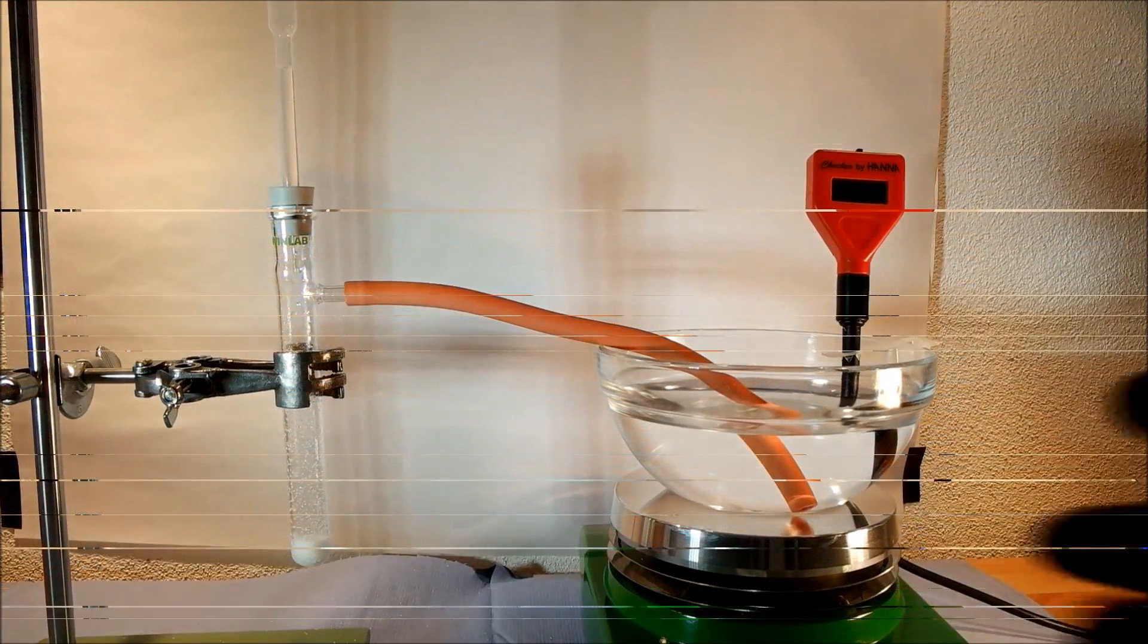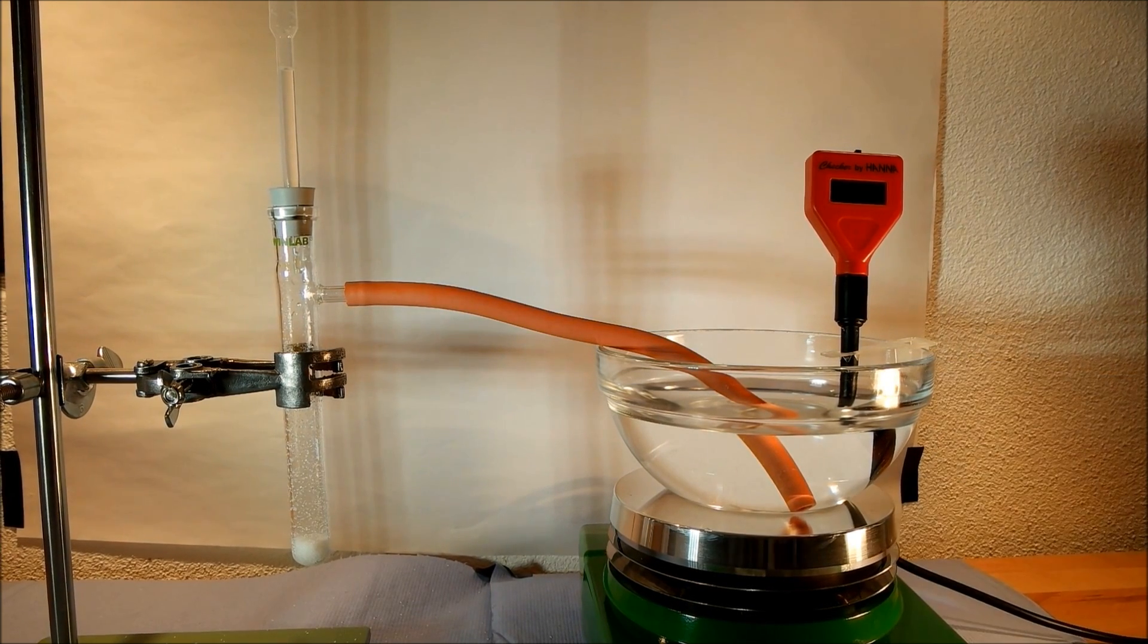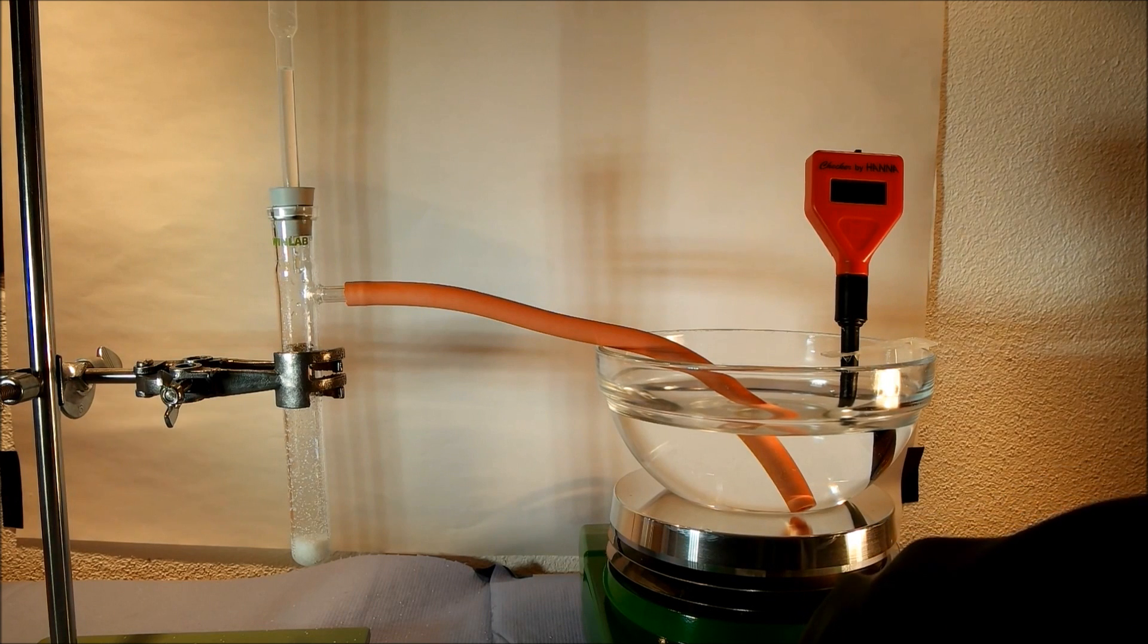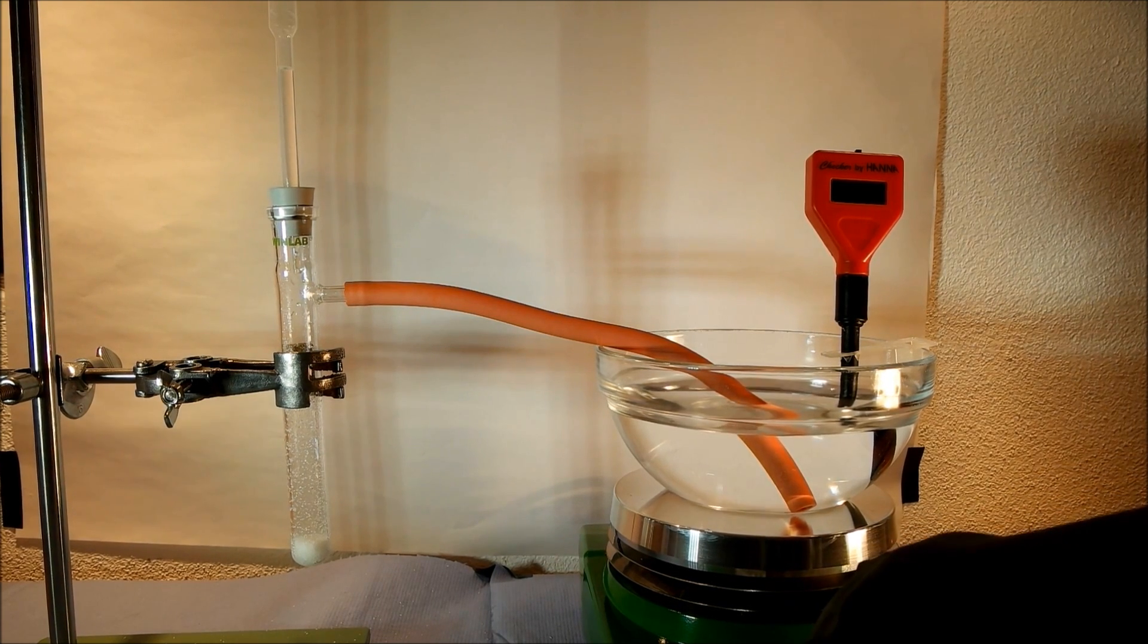The magnetic stirrer is not absolutely necessary, but it's good for mixing the water with the hydrochloric acid later. So if you have one, turn it on now and go on to the next step.